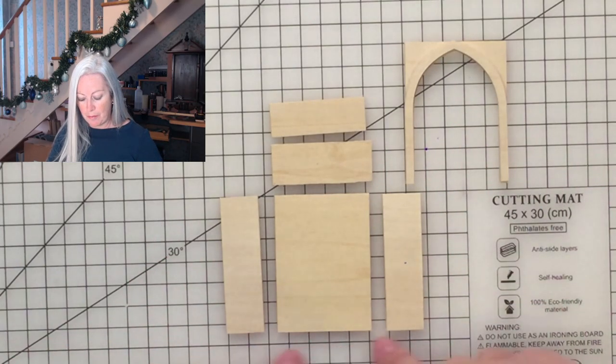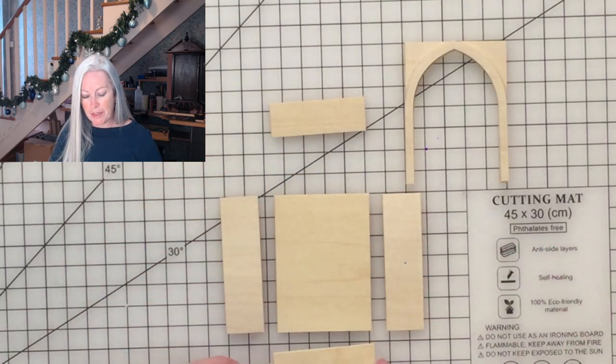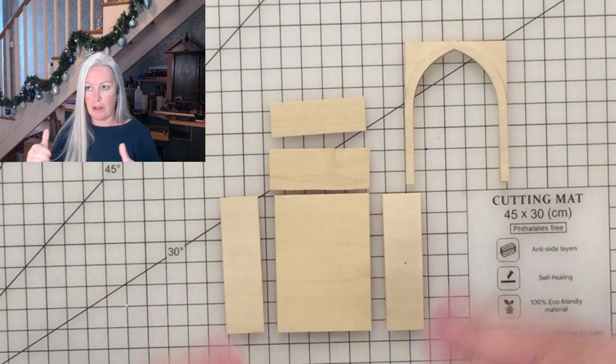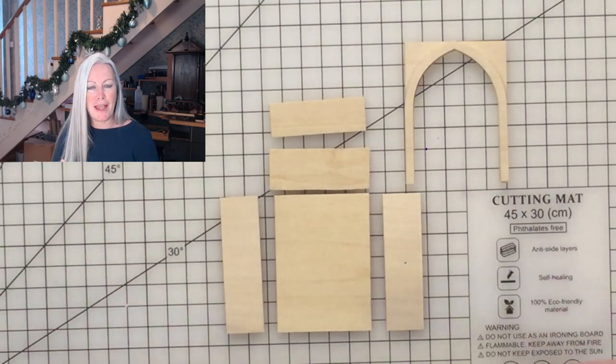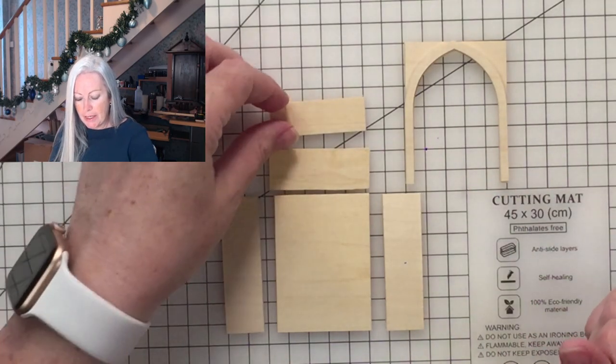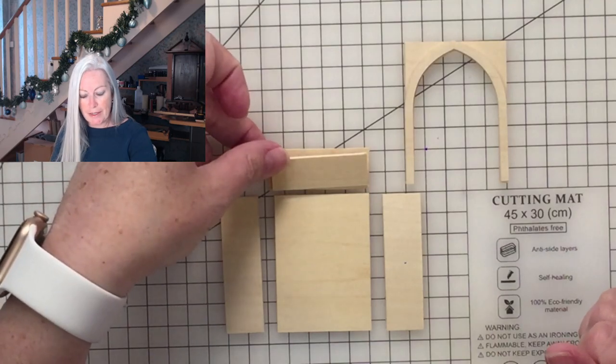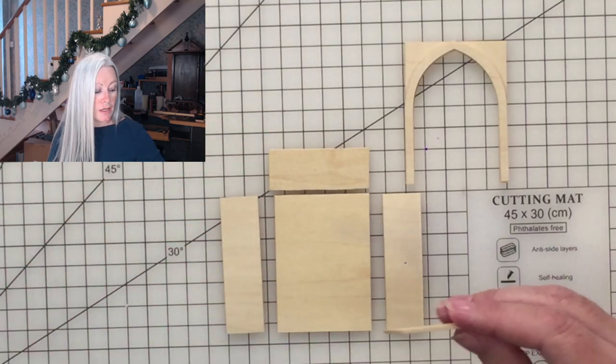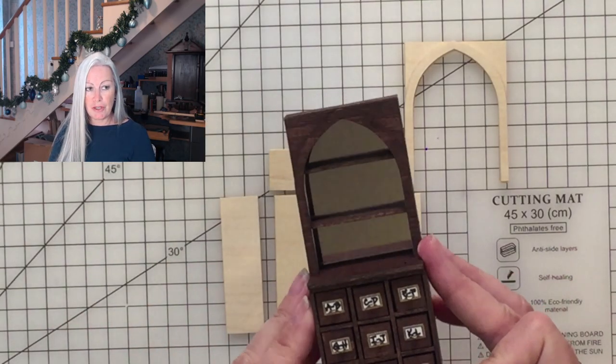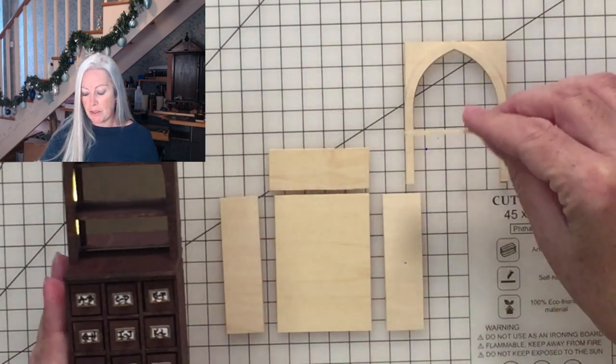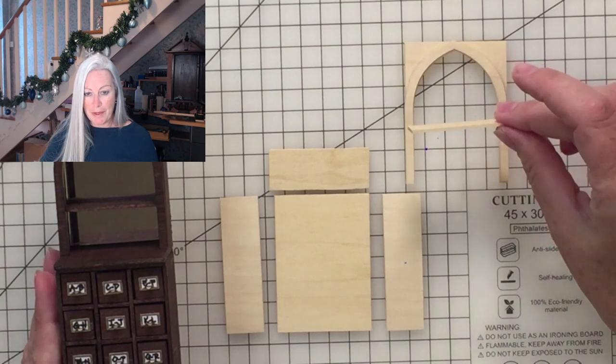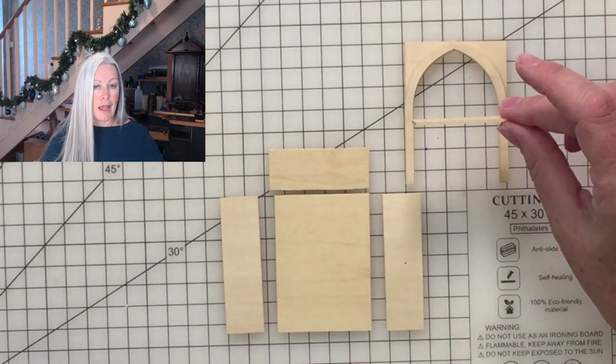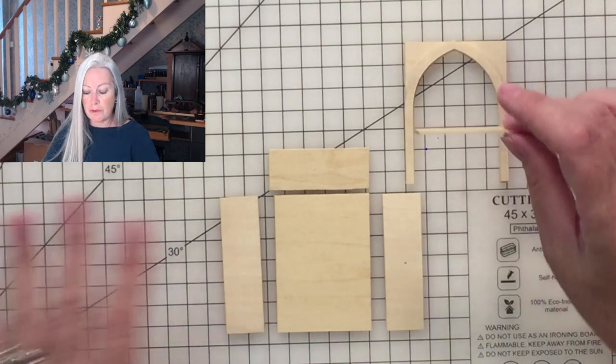You could also make these as standalone shelves. If you want to, you could cut another piece like the top and make a base so that you have a self-contained cabinet. The slightly smaller piece is the shelf and you can cut as many as you want. In this one I did two shelves, I'm going to do one shelf in one of my cabinets.